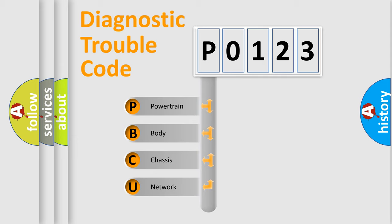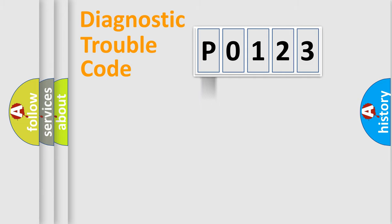We divide the electric system of automobile into the four basic units: Powertrain, Body, Chassis, and Network. This distribution is defined in the first character code.